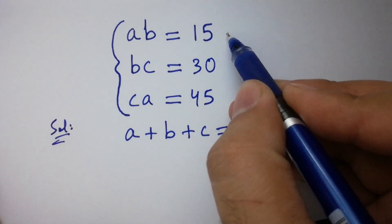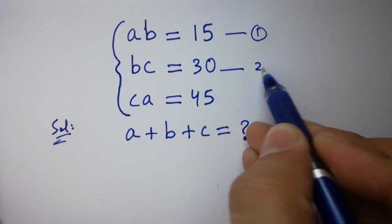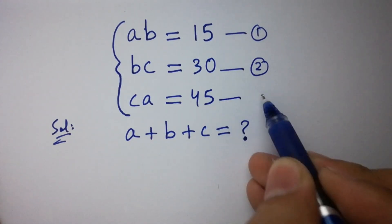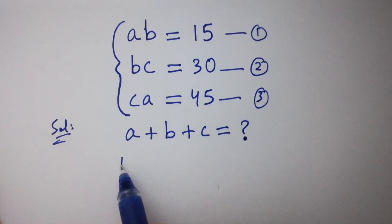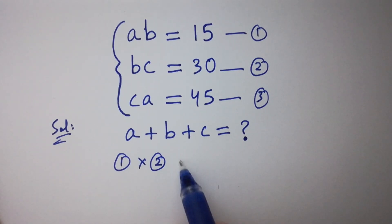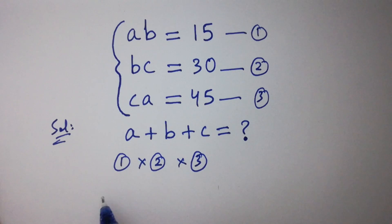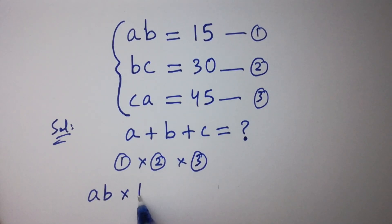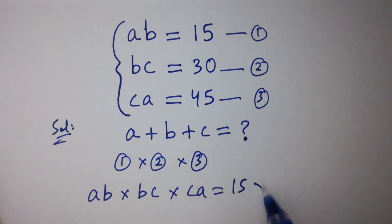Let ab be the first equation, bc the second equation, and ca the third equation. To solve this, multiply these equations together. Then we have ab times bc times ca equal to 15 times 30 times 45.